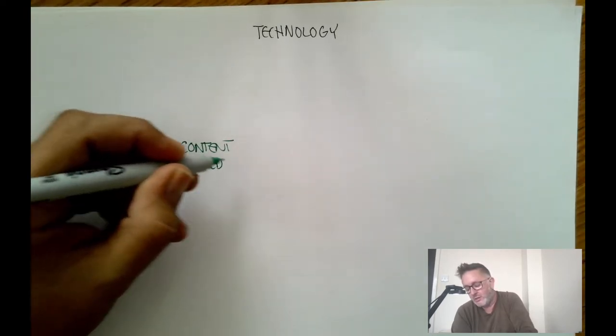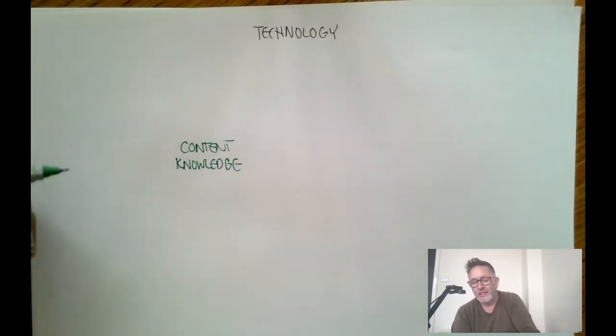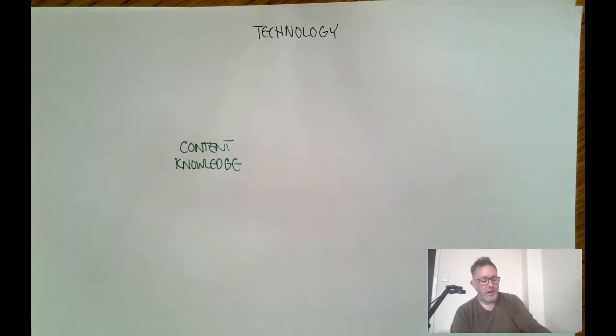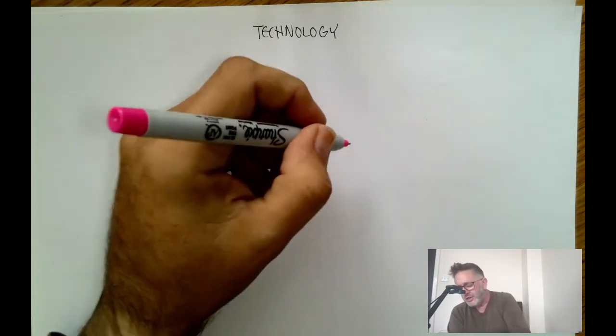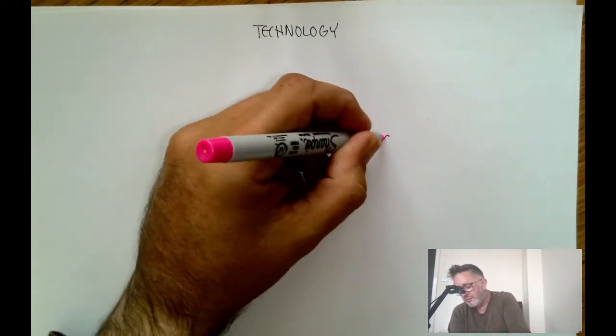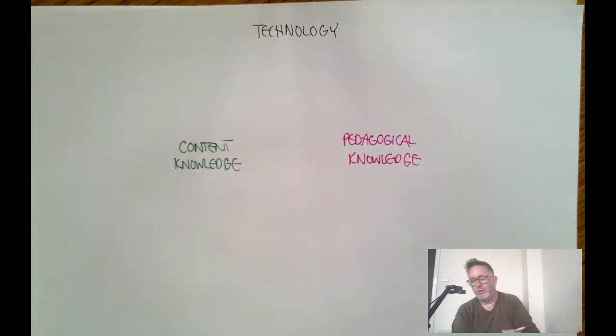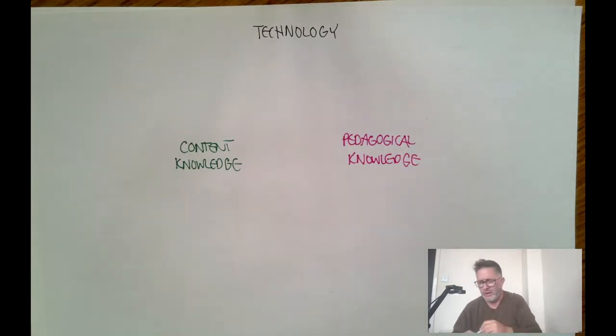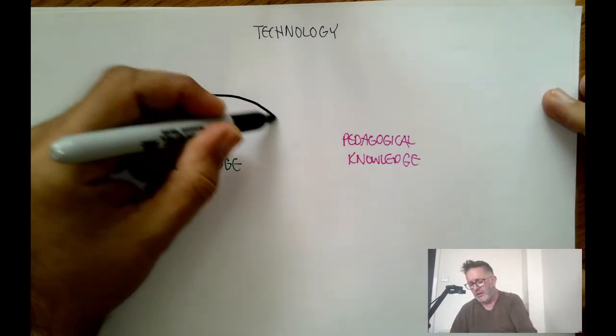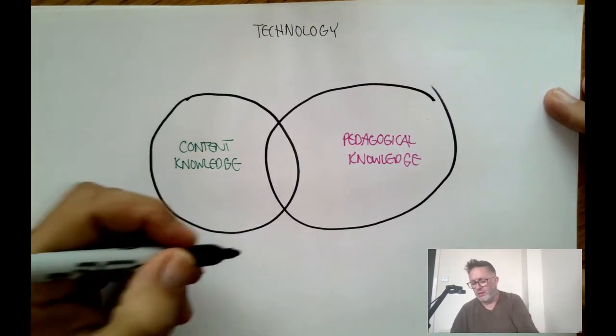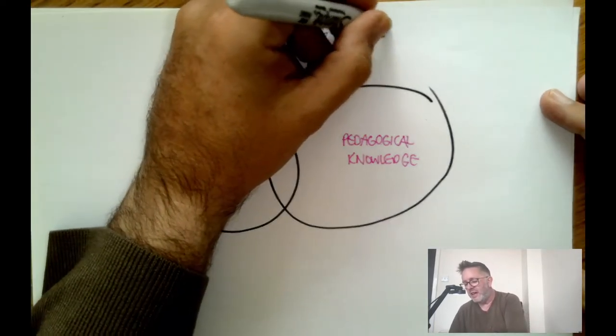We've got lots of that content knowledge deeply ingrained in ourselves because we've completed our degrees, we're subject specialists. We've also trained as teachers, so alongside this content knowledge, we've got our pedagogical knowledge. Shulman back in 1984 postulated that good teaching and learning is when we combine our content knowledge with our pedagogical knowledge, and this formed what he called PCK - the pedagogical content knowledge model.